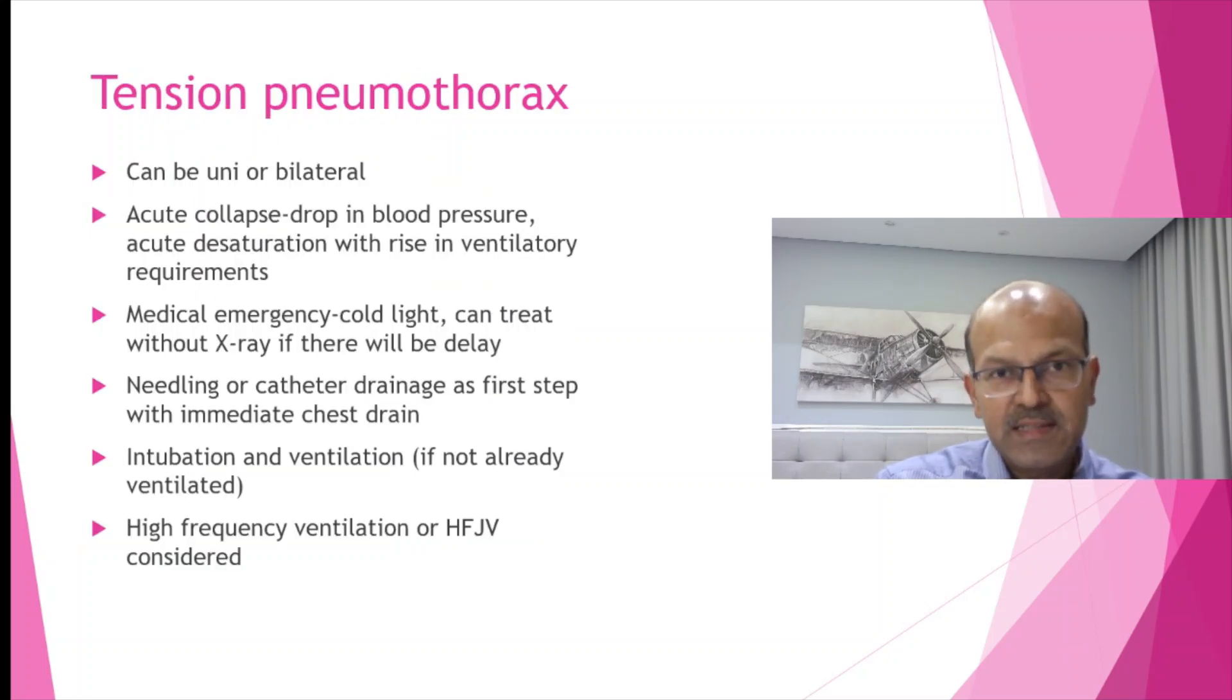Tension pneumothorax is dangerous because it causes hypotension, severe desaturation, metabolic acidosis and a vicious cycle. Baby can collapse and we may lose babies. Sometimes the tension pneumothorax can spread into a pneumopericardium. It can be uni or bilateral. We note an acute collapse in blood pressure, deterioration with rise in ventilatory requirements. It's a medical emergency so you can do a cold light and treat without x-ray if there will be a delay. Needling or catheter drainage as a first step with immediate chest drain is important. Intubation and ventilation if not already ventilated is important, and high frequency ventilation or high frequency jet ventilation can be considered.